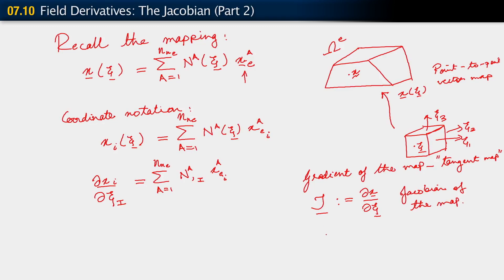Now, this is direct notation for this tangent map. We can also adopt coordinate notation. So in coordinate notation, that tangent map is J little i capital I, is the derivative of the xi coordinate, x little i, with respect to c capital I.